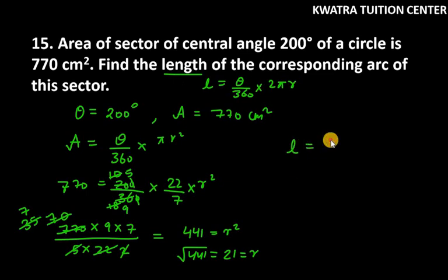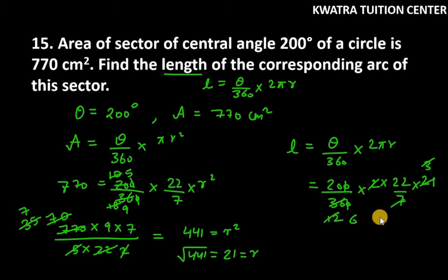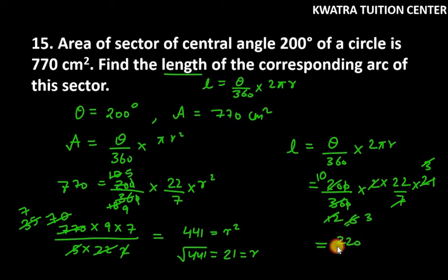Now we have to find the arc length: L = (theta/360) × 2πr. Theta is 200, denominator is 360, then 2 × (22/7) × 21. We reduce 7 and 21 to get 3; the zeros cancel; 3 and 36 cancel to give 12; 2 and 12 cancel to give 6; 10 and 6 cancel to give 3. So we get 10 and 22 in the numerator, giving 220, and 3 in the denominator. The answer is 220/3 cm.